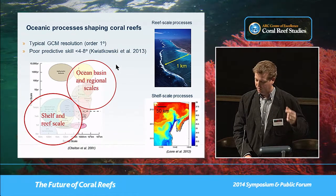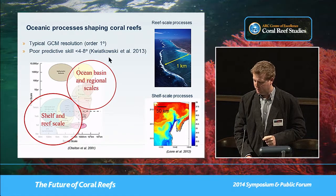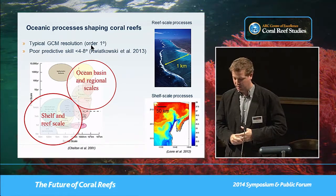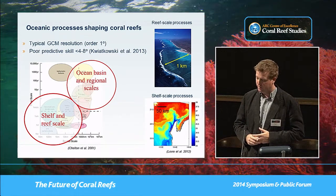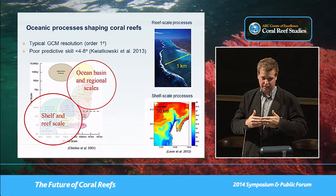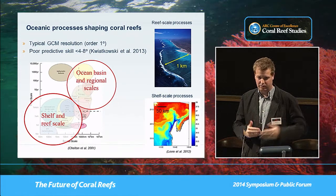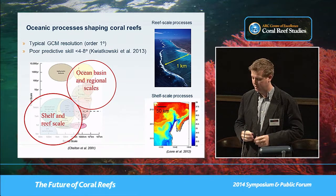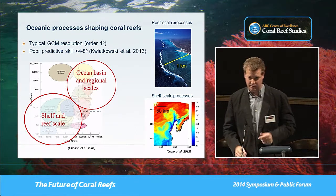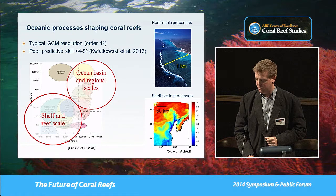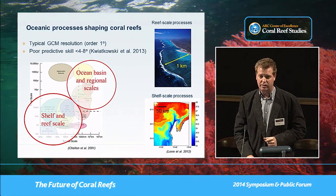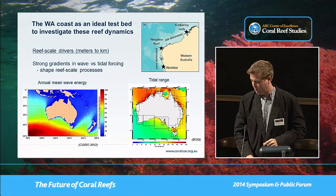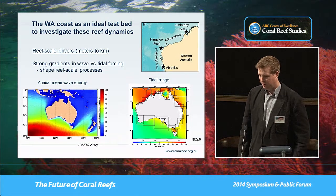Looking into the future, even though typical GCMs have resolutions on the order of a degree or about 100 kilometers, studies on hindcast predictions show that predictive skill drops off at around four to eight degrees — up to 800 kilometers. So we're really not resolving these important processes that influence reefs.